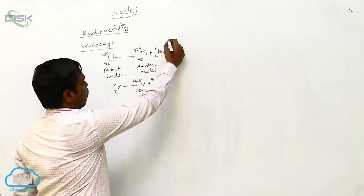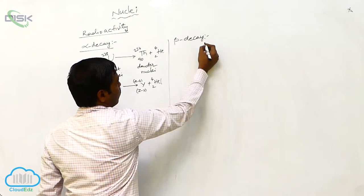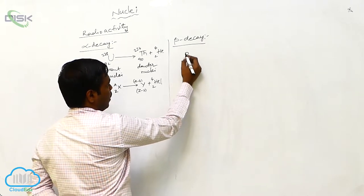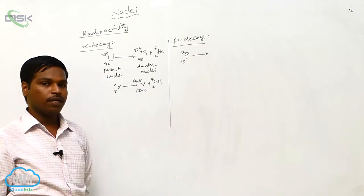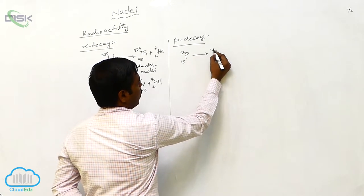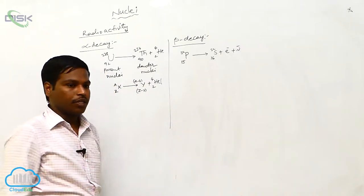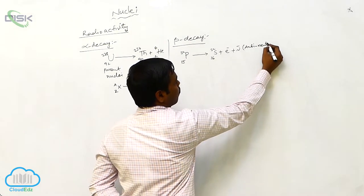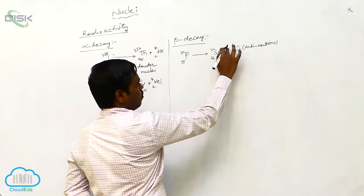This is the alpha decay. Now coming to beta decay. For this beta decay, we have the example of phosphorus-15-32, which decays into sulfur-16-32, giving an electron and also an antineutrino. The electron has charge minus 1 and mass number 0.